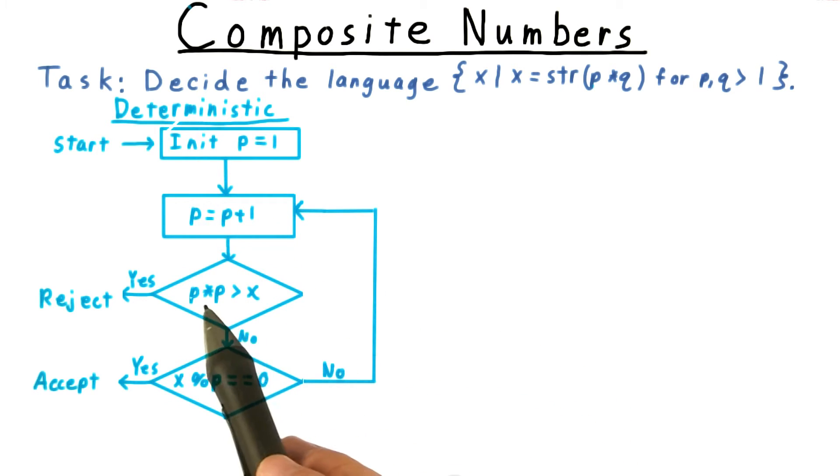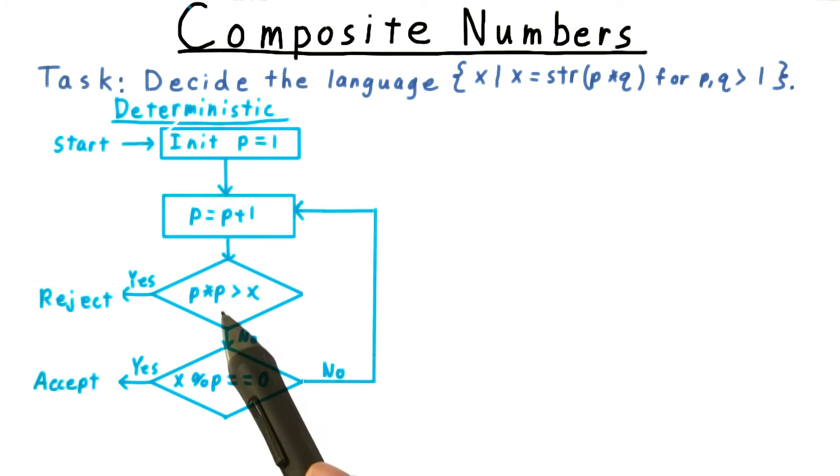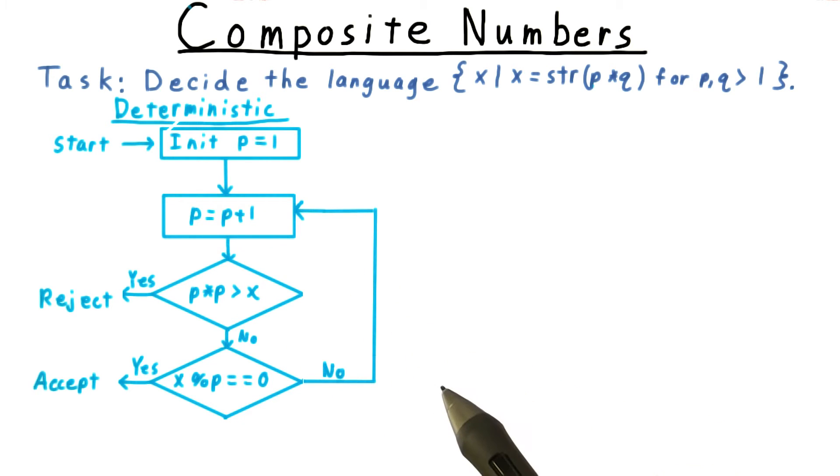Then we increment it and test whether p squared is greater than x. If it is, then trying larger values of p won't help us, and we can reject. If p squared is no larger than x, however, then we test to see if p divides x. If it does, then we accept. If not, then we go back and try the next value for p.